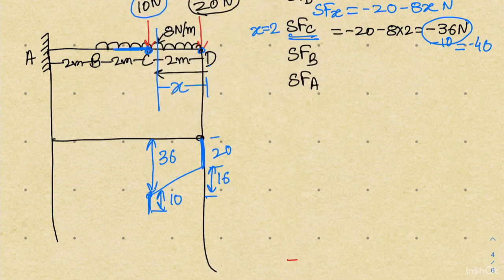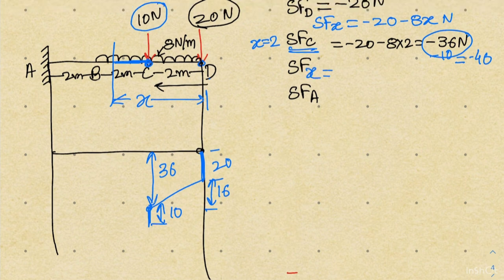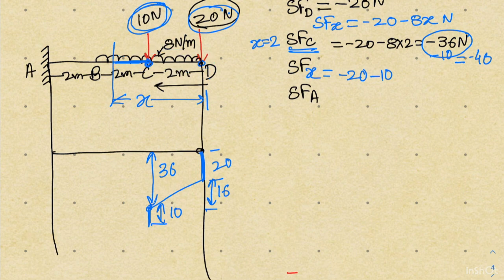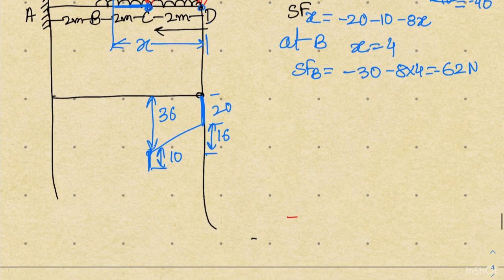Beyond point C, the uniformly distributed load continues, so we introduce a new x variable for the region between C and B. The shear force expression for any distance x from point C toward B is: minus 20 minus 10 minus 8 times x, accounting for both point loads and the cumulative UDL. When x equals 4 meters at point B, the shear force at B is minus 20 minus 10 minus 8 times 4, which equals minus 62 newton.